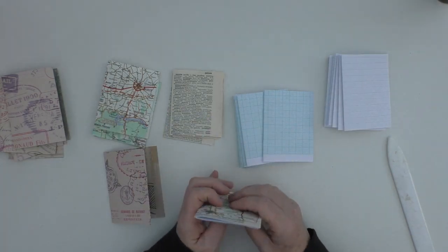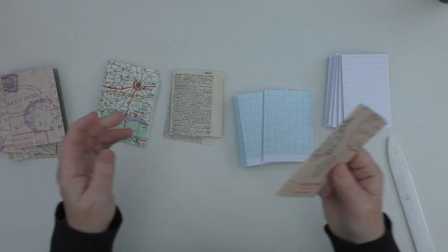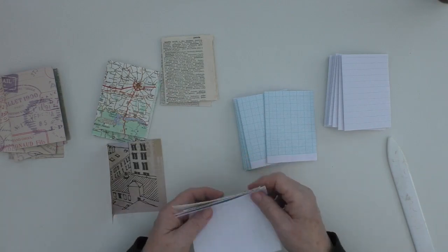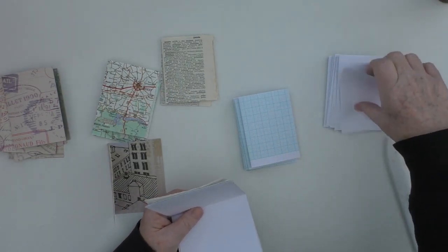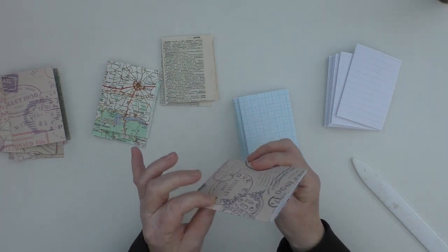Or you can make it a mini junk journal just by using junk mail, old envelopes, anything of that sort. So I think for this, I think I end up putting around about seven folded papers in.